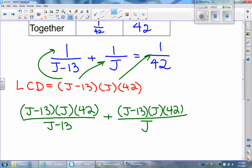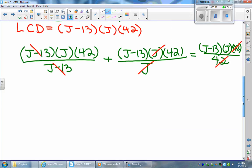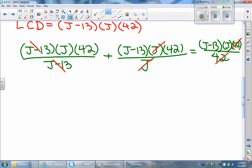And all of that should be equal to j minus 13 times j times 42 divided by 42. Now the purpose of a lowest common denominator is that we end up canceling, getting rid of our denominator. So the factor j minus 13 cancels in the first term, the factor j cancels in the second term, and the factor 42 cancels in the third term. And now we're left with no more fractions.